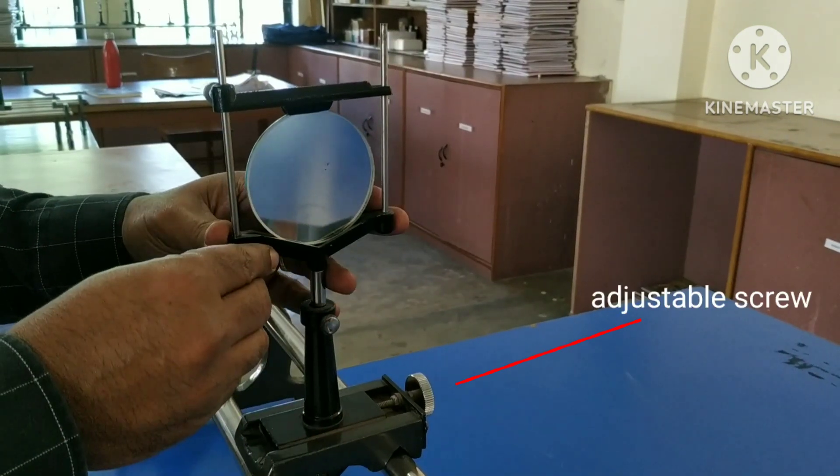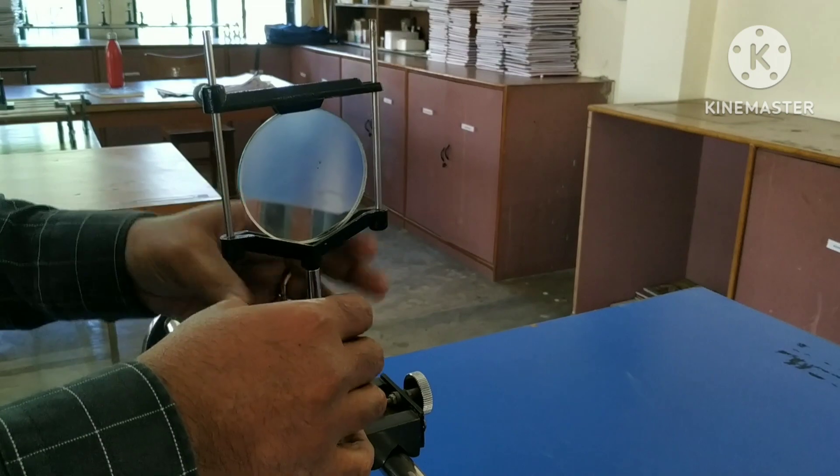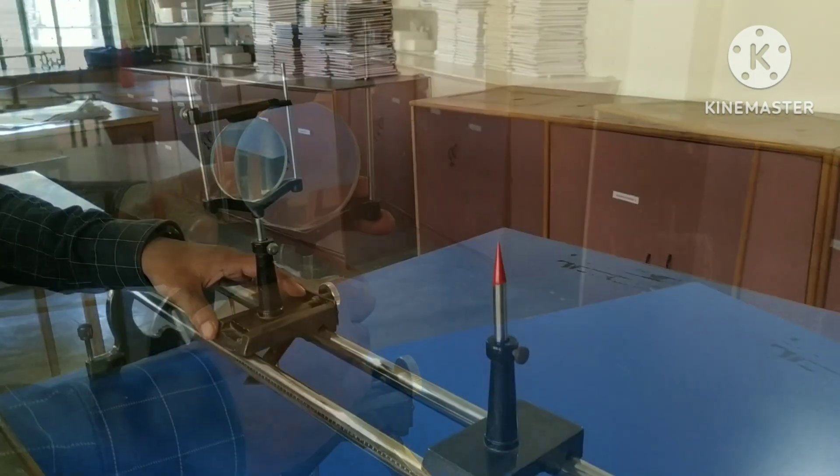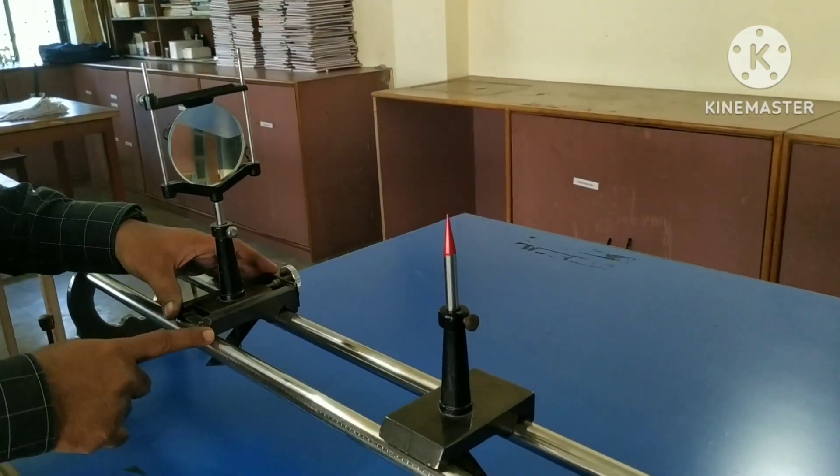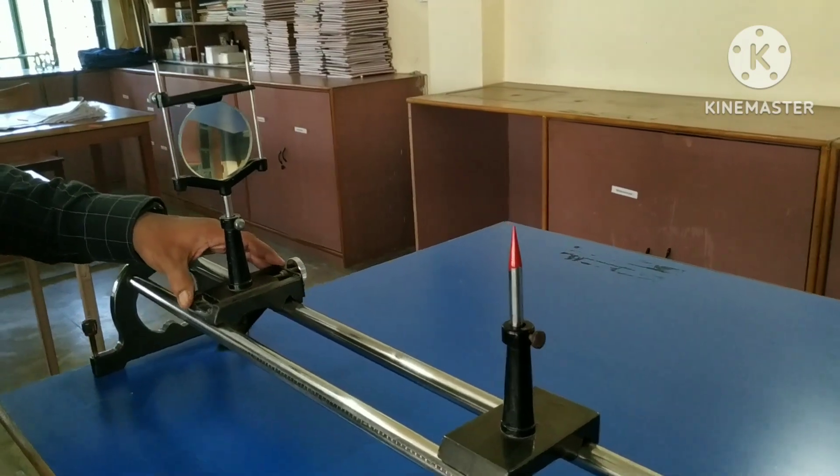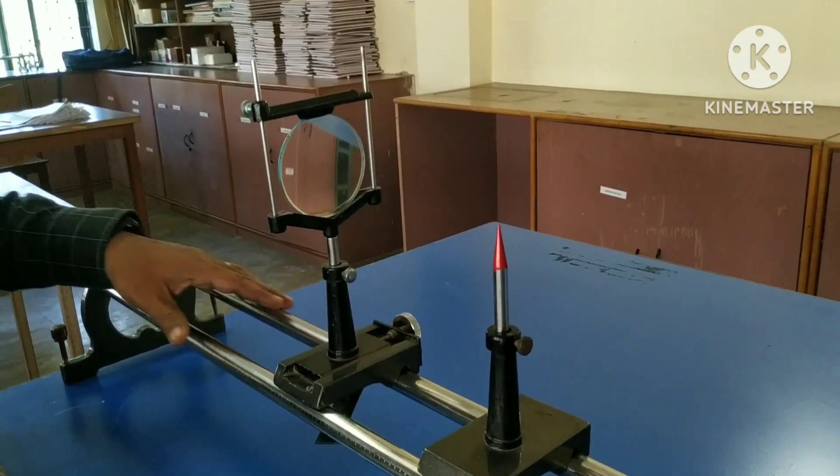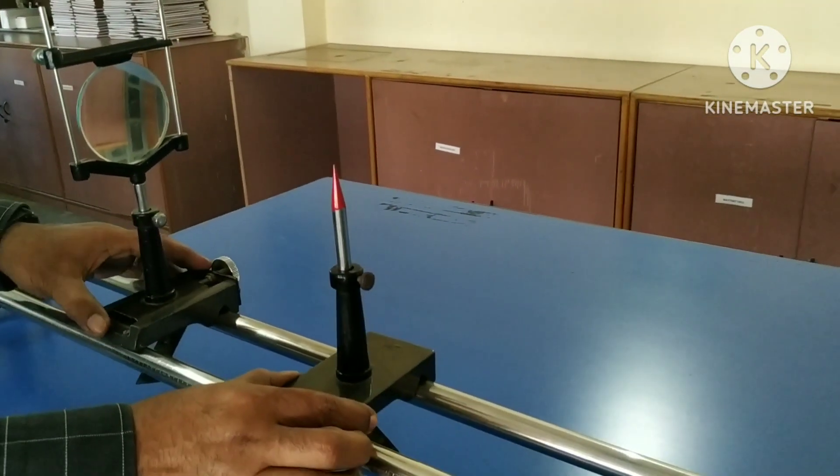The mirror stand has an adjustable screw by which we can move the mirror holder horizontally as per our requirement. The mirror stand can be moved on the rail. In the same way, the pin stand also can be moved.